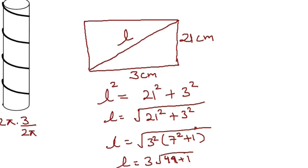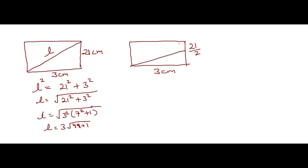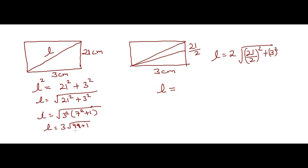Let's try n = 2. With 2 turns, the width (circumference) remains 3 cm but the height per turn becomes 21/2. We can generalize: l = n × √((21/n)² + 3²). Factoring out 3: l = n × 3 × √((7/n)² + 1), or equivalently l = 3√(49 + n²) — wait, let me set this up properly.